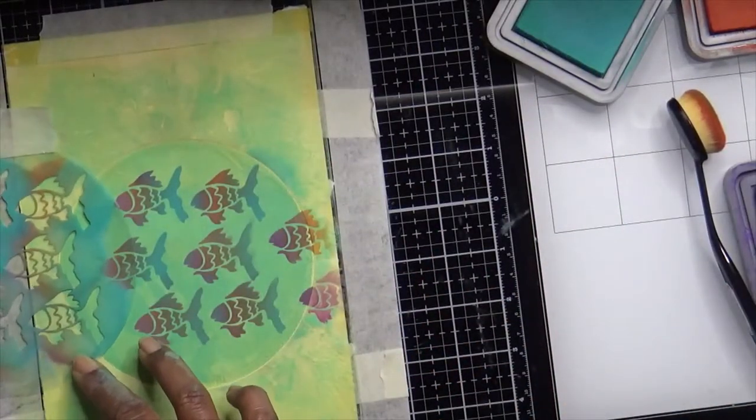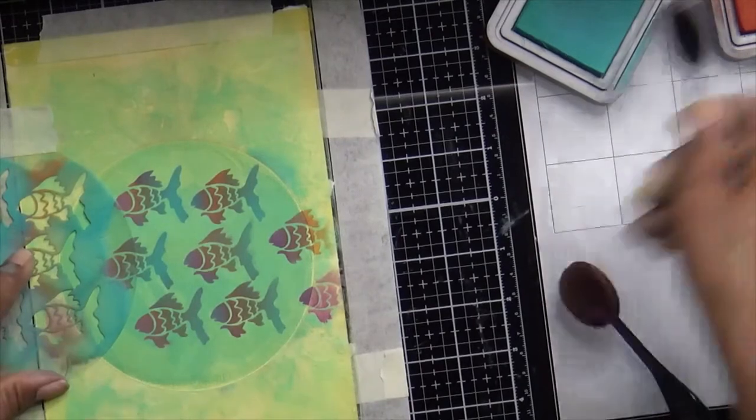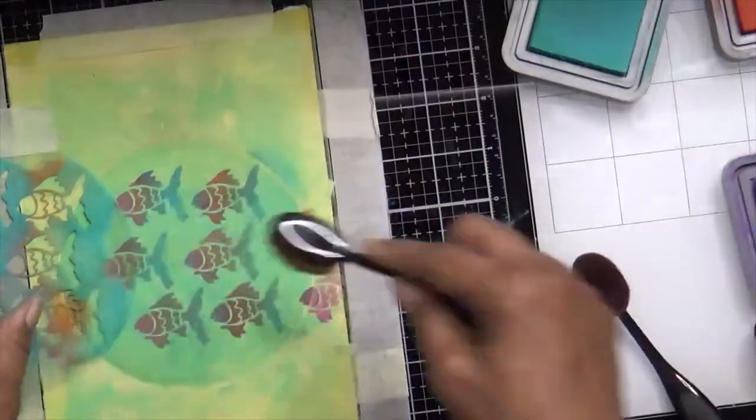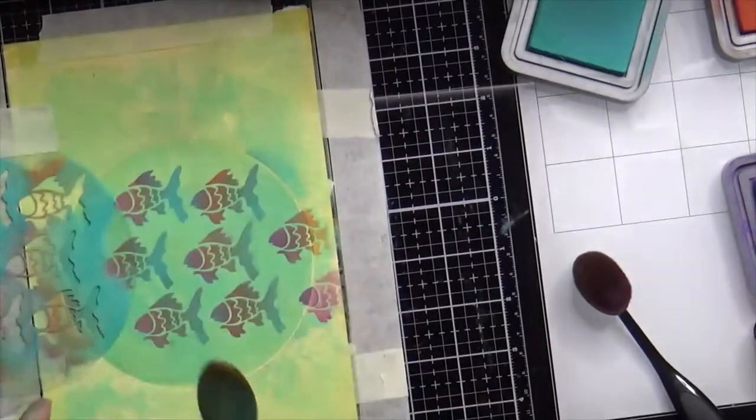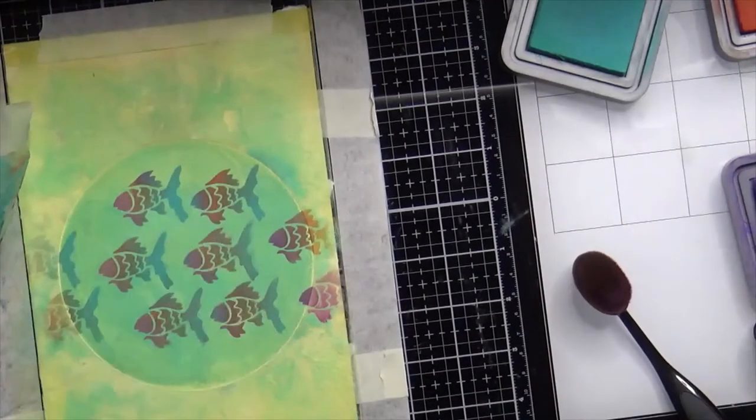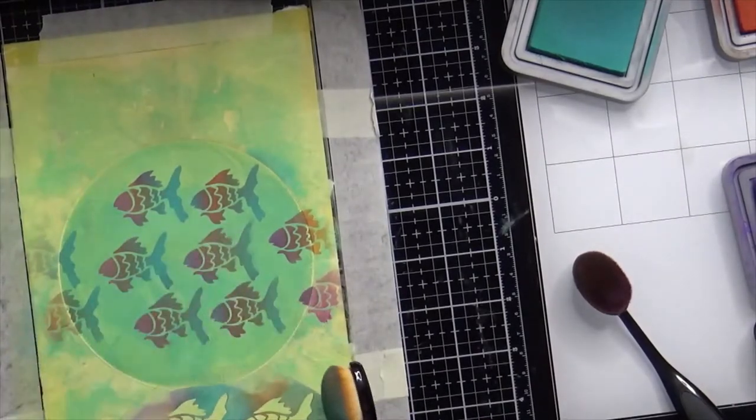Now I still have my original circle stencil or the mask down so that I'm only concentrating on the inside of the circle.